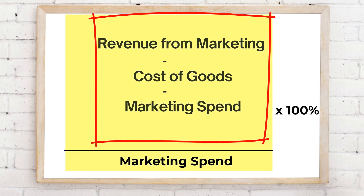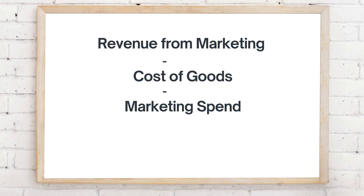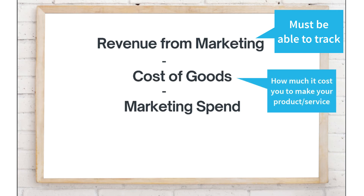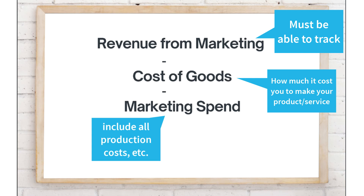If we dive further into it — the revenue your marketing initiative generated: in order for you to know this number, you have to be able to find a way to track or attribute your sales to the marketing initiative. Cost of goods is how much it costs you to make your product or service. Marketing spend is the total amount of money that you are putting towards this marketing initiative — for example, if you're doing television, you're going to include the cost of production and also your ad rates here.